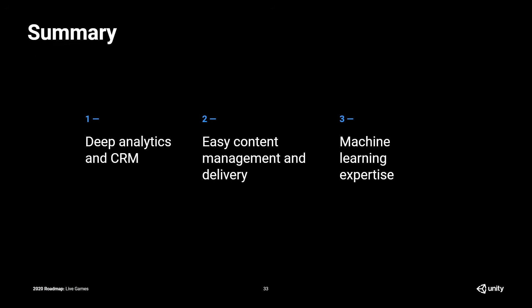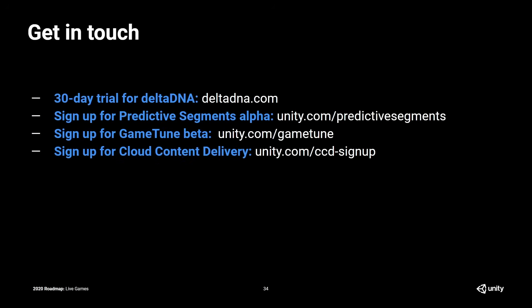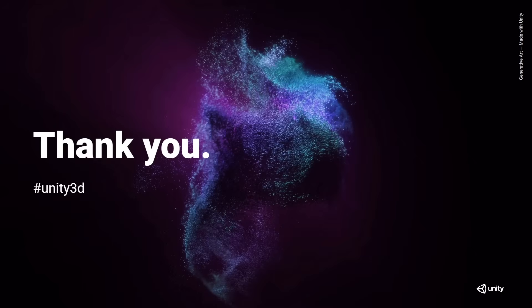To summarize, across live games what we're really trying to do is give people deep analytics and CRM, really easy content management and delivery, and the power to use machine learning in their games without needing lots of data science expertise. For DeltaDNA, go to deltadna.com. For Predictive Segments, go to unity.com/predictive-segments. For GameTune, go to unity.com/GameTune. For Cloud Content Delivery, go to unity.com/ccd-signup. We're also holding a Q&A with our product teams on the Unity forum — click the link in the description below, as product experts will be dedicated to answering all your roadmap questions until Friday.